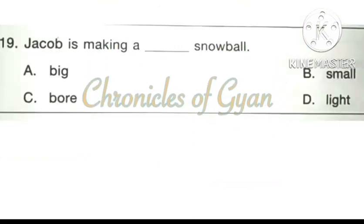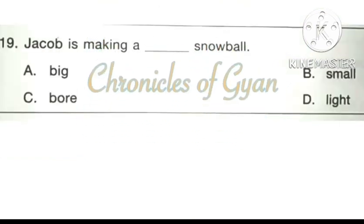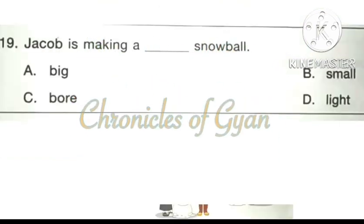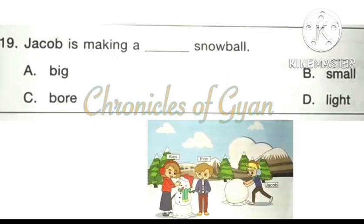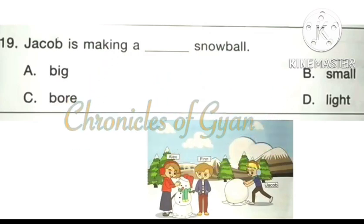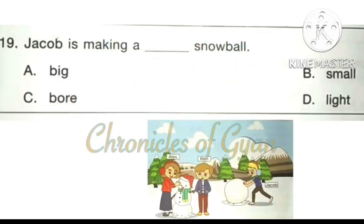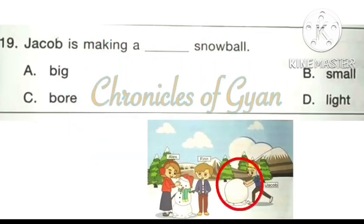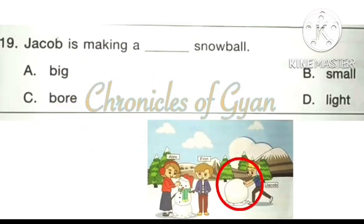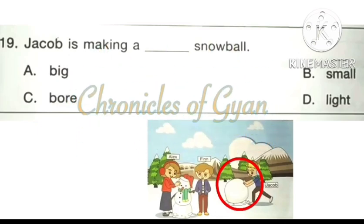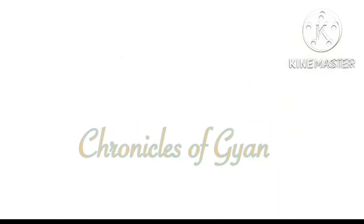Question 19: Jacob is making a dash snowball. Looking at the picture, we can see that Jacob is making a very big snowball. The correct answer is option A: Big.